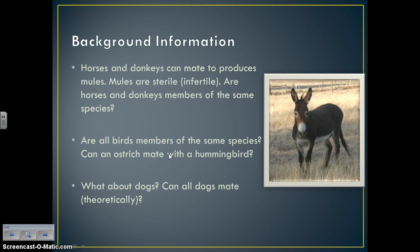What about dogs? Can all dogs mate? Theoretically speaking, yes, they can. This is why we have mixed breeds like golden doodles or schnoodles. If they could figure it out, a Great Dane could actually mate with a chihuahua, so they are the same species.